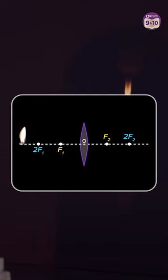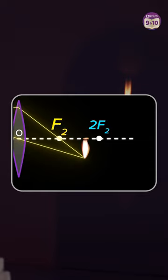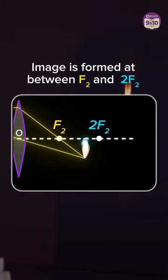When the object is placed beyond 2f1, one light ray moves parallel to the principal axis and the other passes through the optical centre of the lens. The rays intersect between f2 and 2f2 where the image is formed.